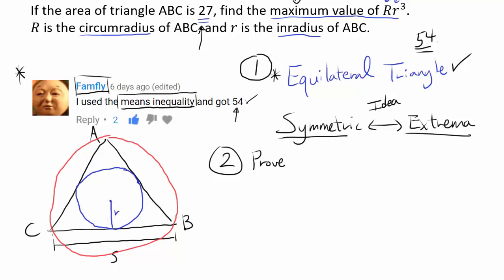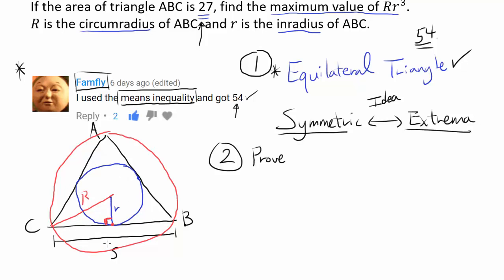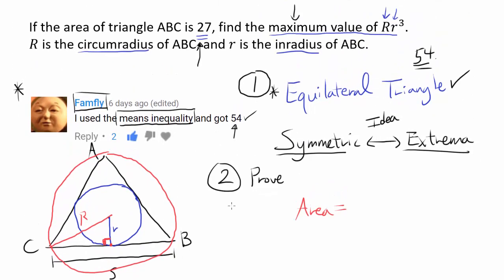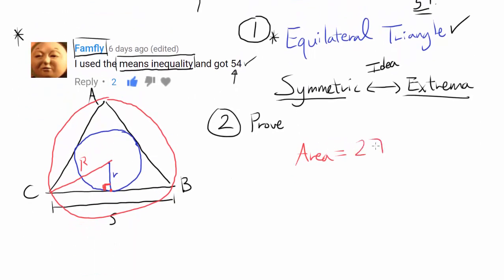That angle is 90 degrees because this is the point of tangency. Let me write that area equals 27 next to it, because we're going to have to use that in the near future. So how can we find lowercase r and capital R? Let's start by finding the side length of the equilateral triangle.